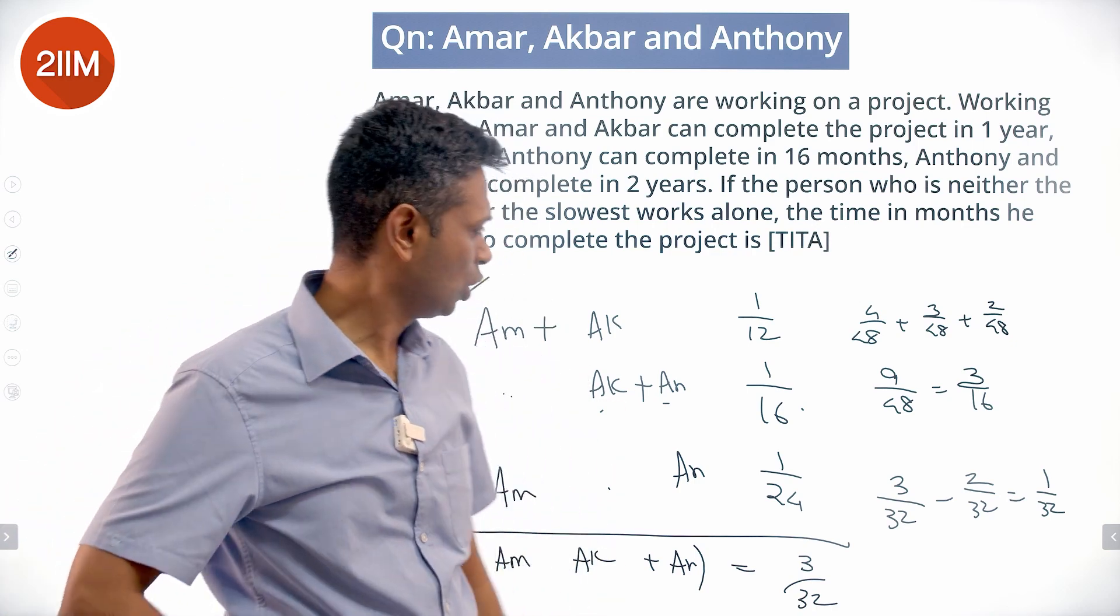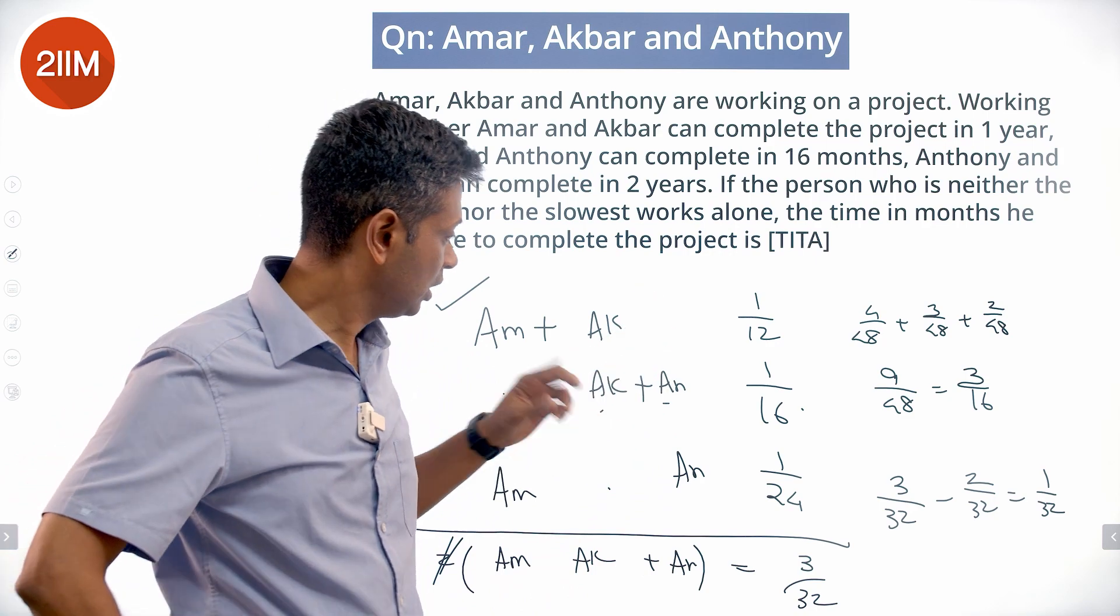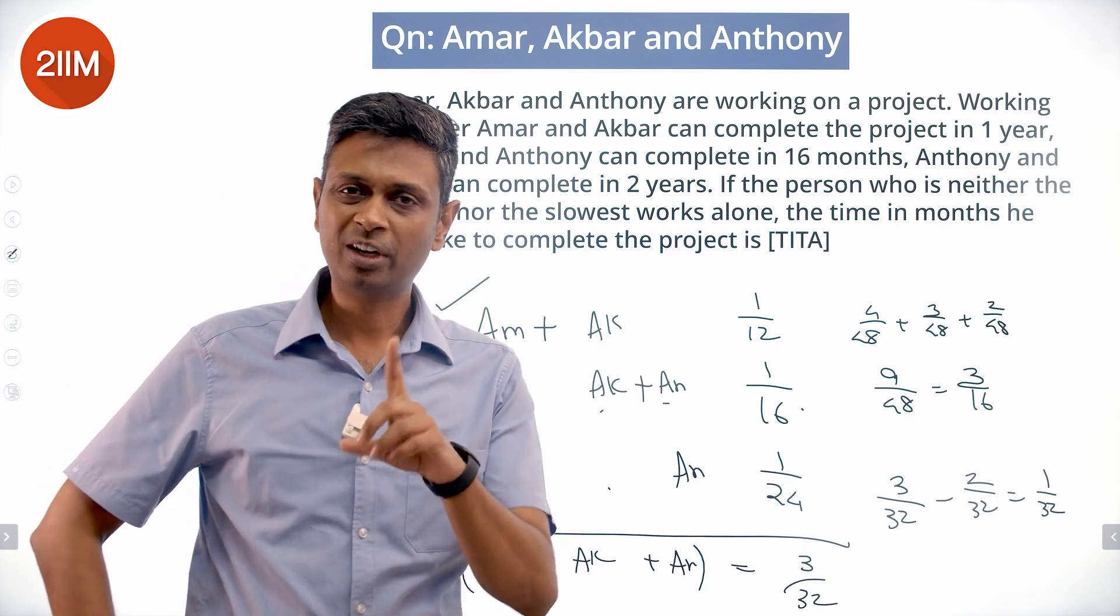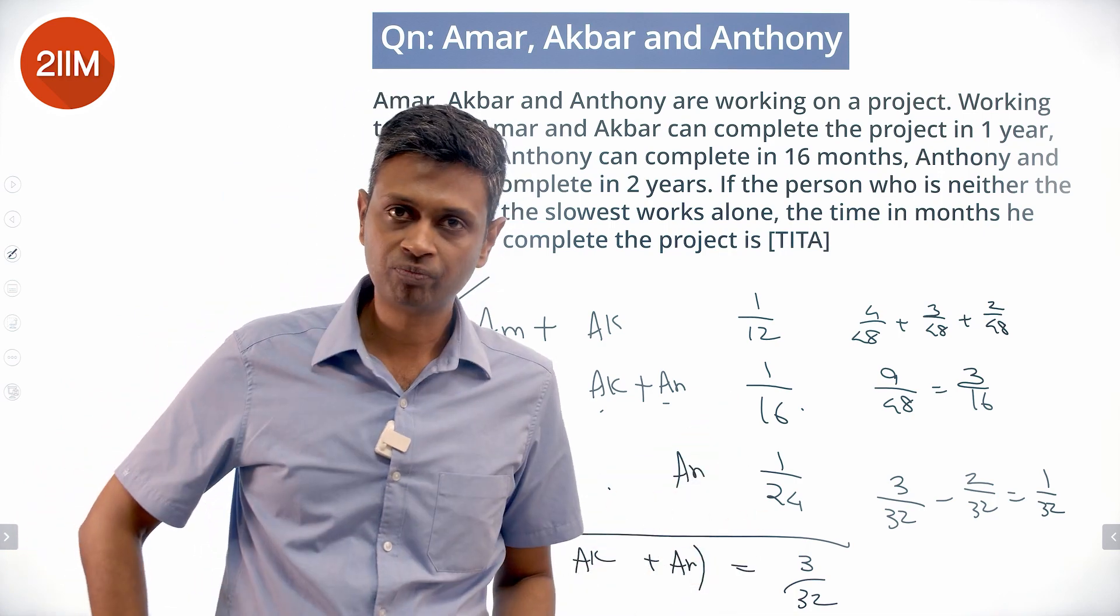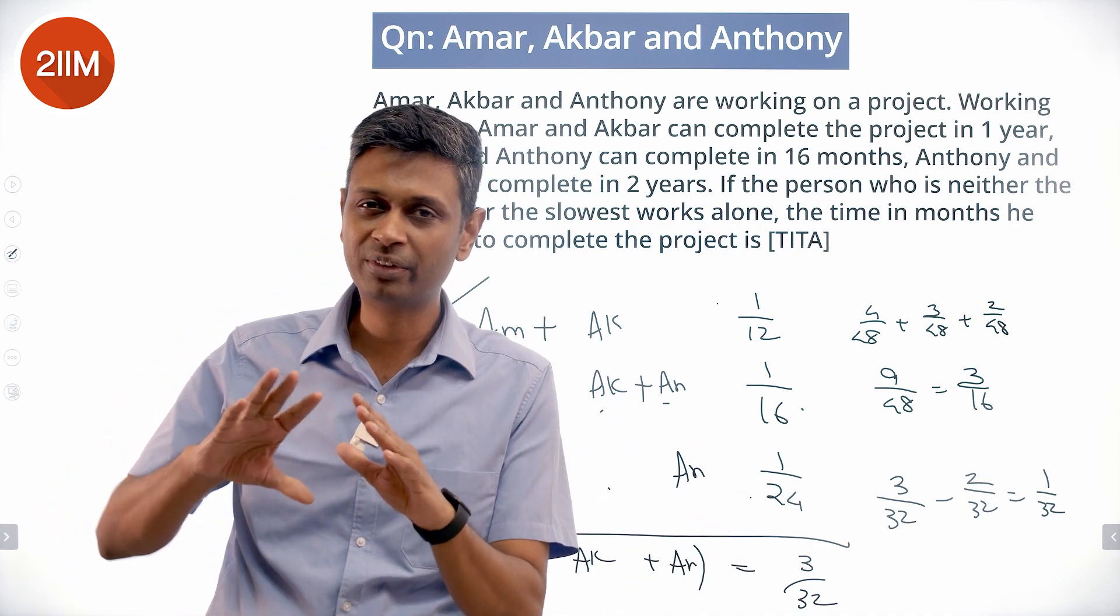What are we doing here? Amar plus Akbar in one month can finish 1/12 of the task. Akbar plus Anthony in one month can finish 1/16 of the task. Amar plus Anthony in one month can finish 1/24 of the task.